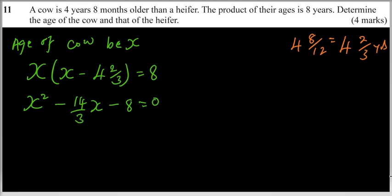This is a quadratic equation. We can make it appear better by multiplying throughout by 3. So we have 3X squared minus 14X minus 24 equals 0. So this is a quadratic equation.